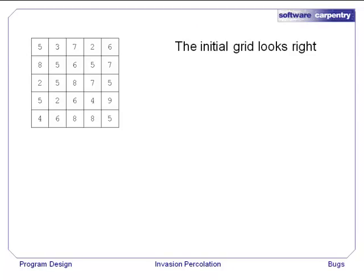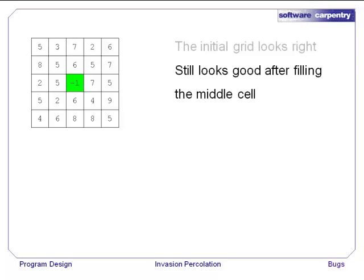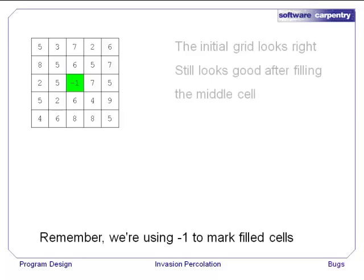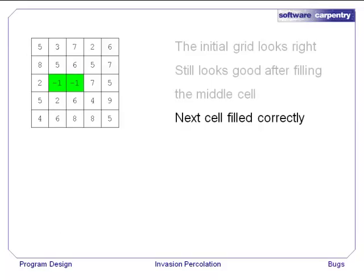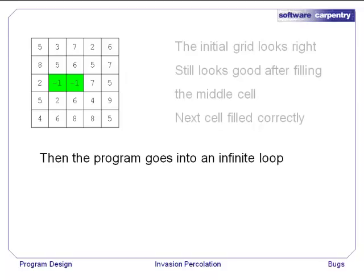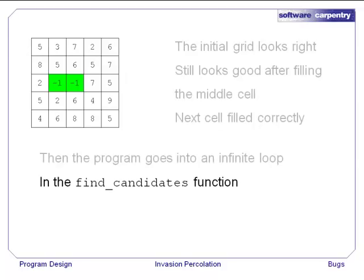If we take a look at the grid that was created, it looks okay. All of the values are in the range 1 to 10, and it's a 5x5 grid implemented as a list of lists. Fill the middle cell with minus 1. Everything still looks good. Remember, we're using minus 1 to mark filled cells. The next cell gets chosen and filled correctly, and then the program goes into an infinite loop in the FindCandidates function.